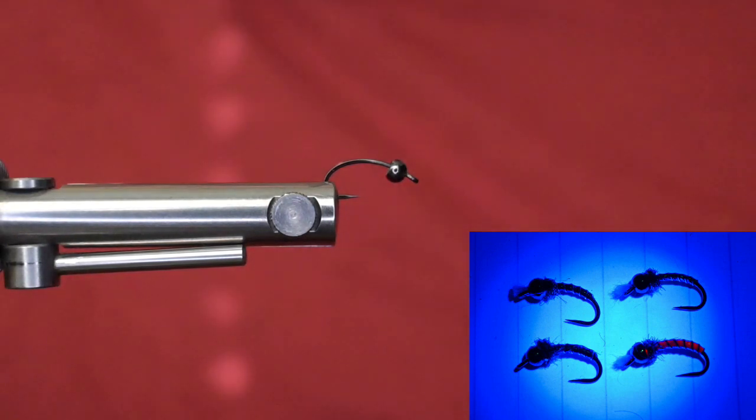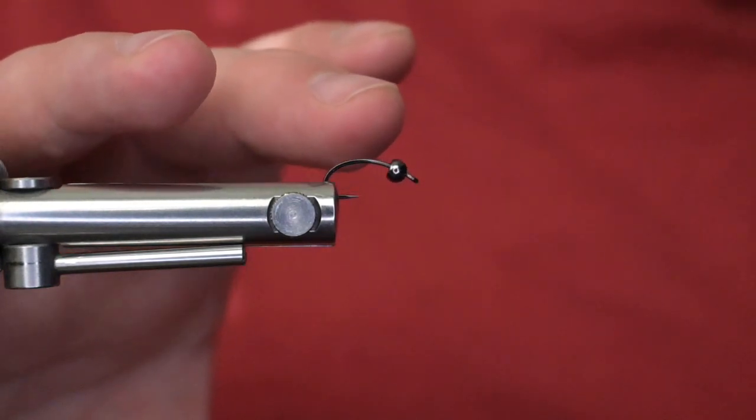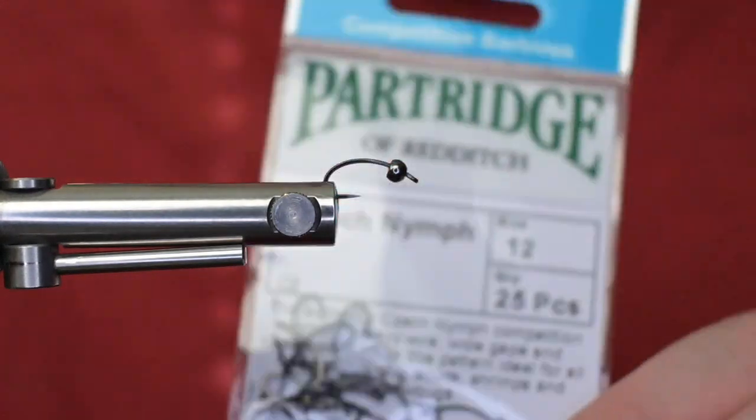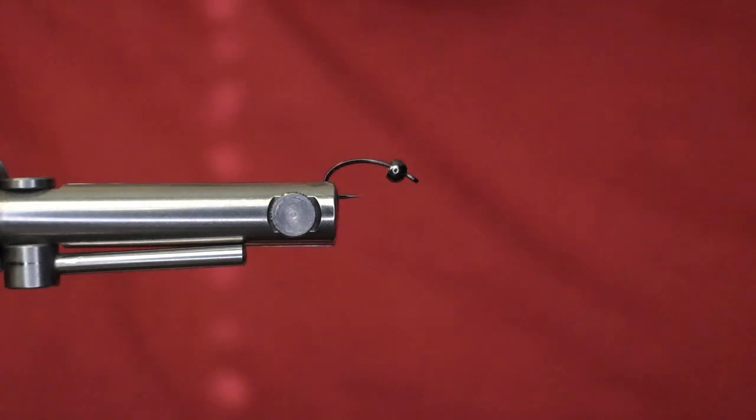So to get started here, this is actually going to be my now permanent Chronimid hook, and that is Partridge's Czech nymph. This is a size 12. I really like the length of this hook with the curvature that it has. It's not over curved, it does give some curvature to it.